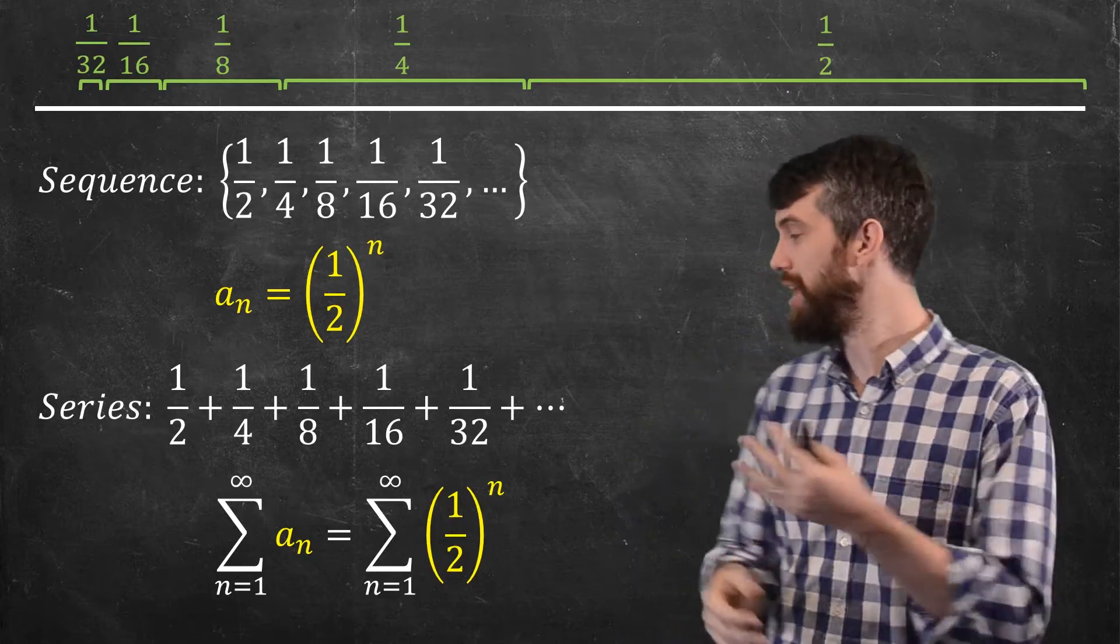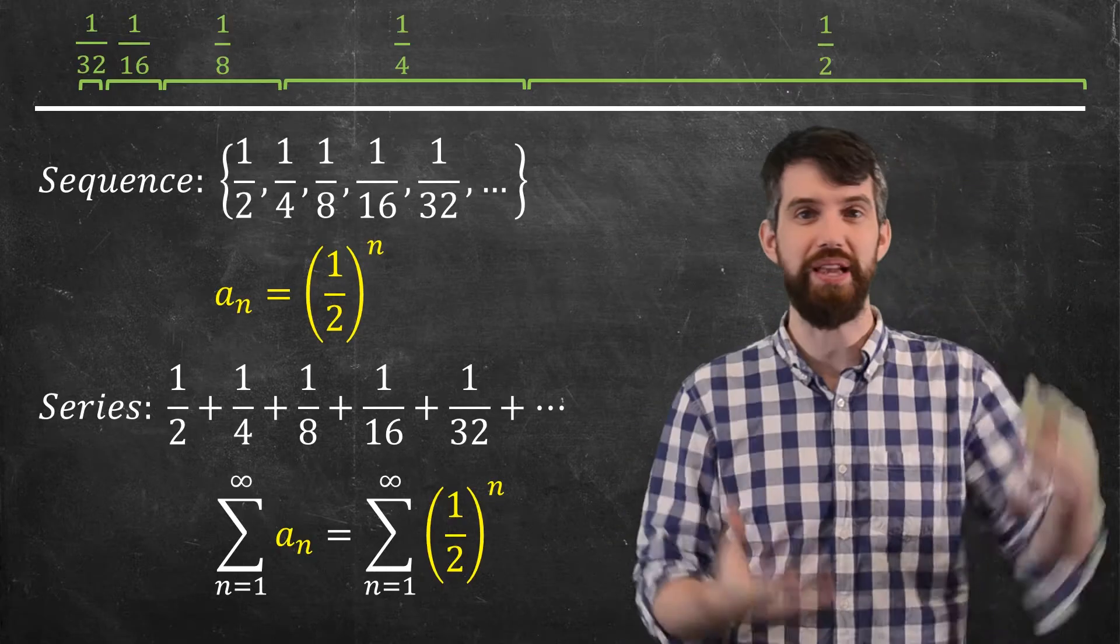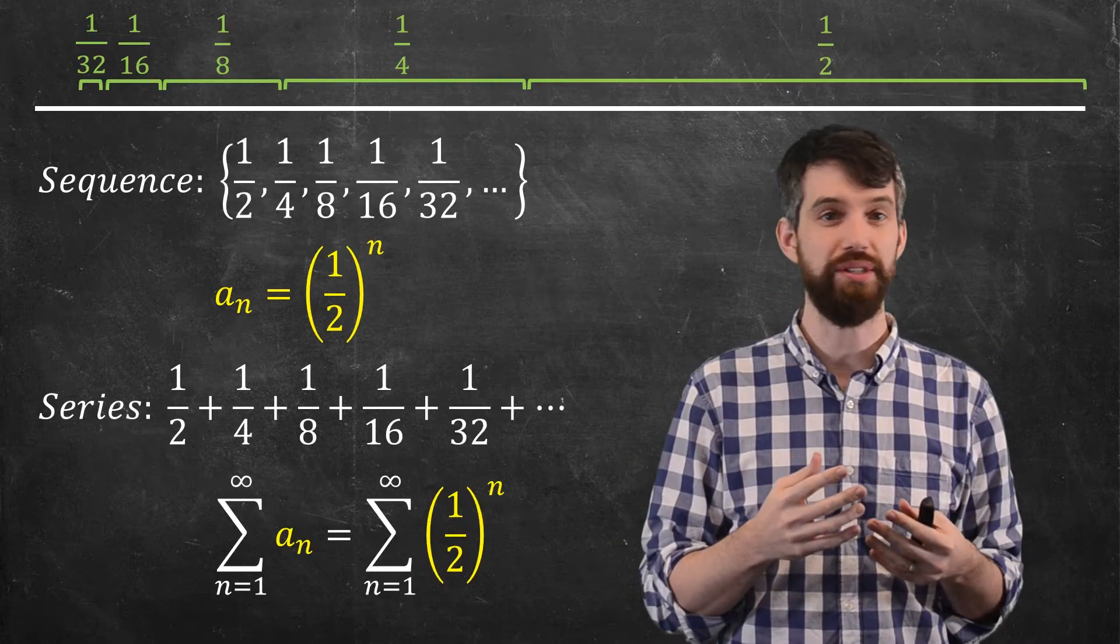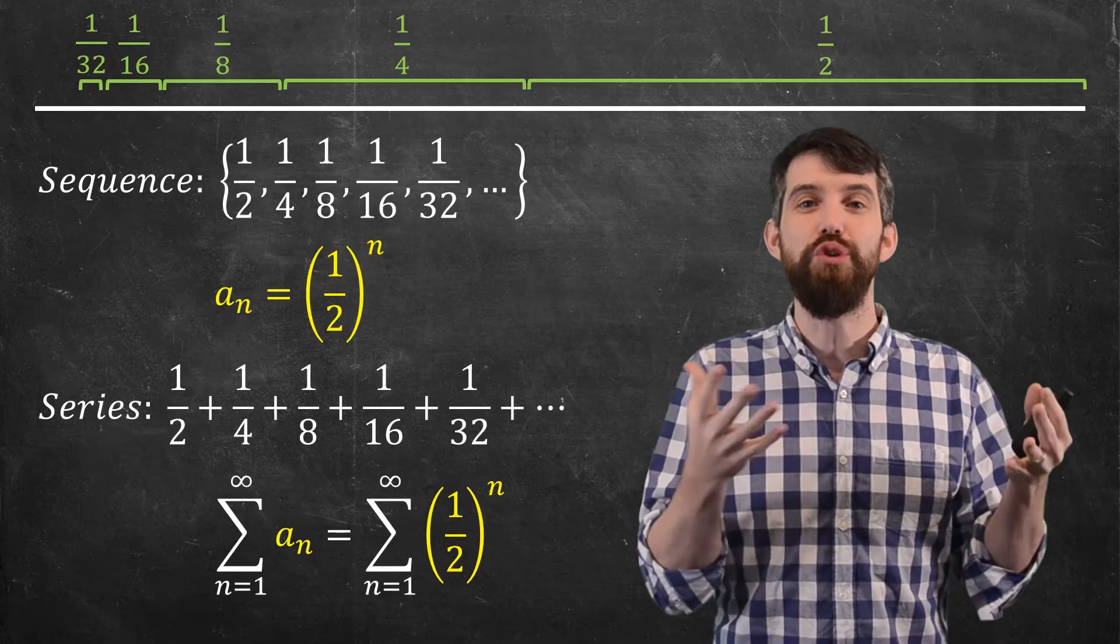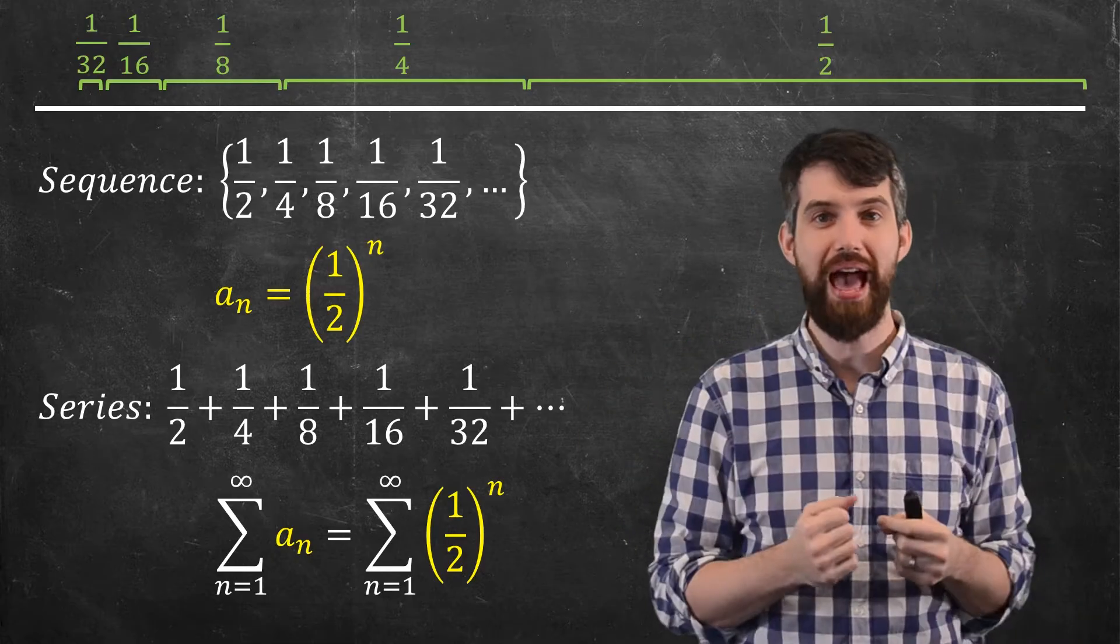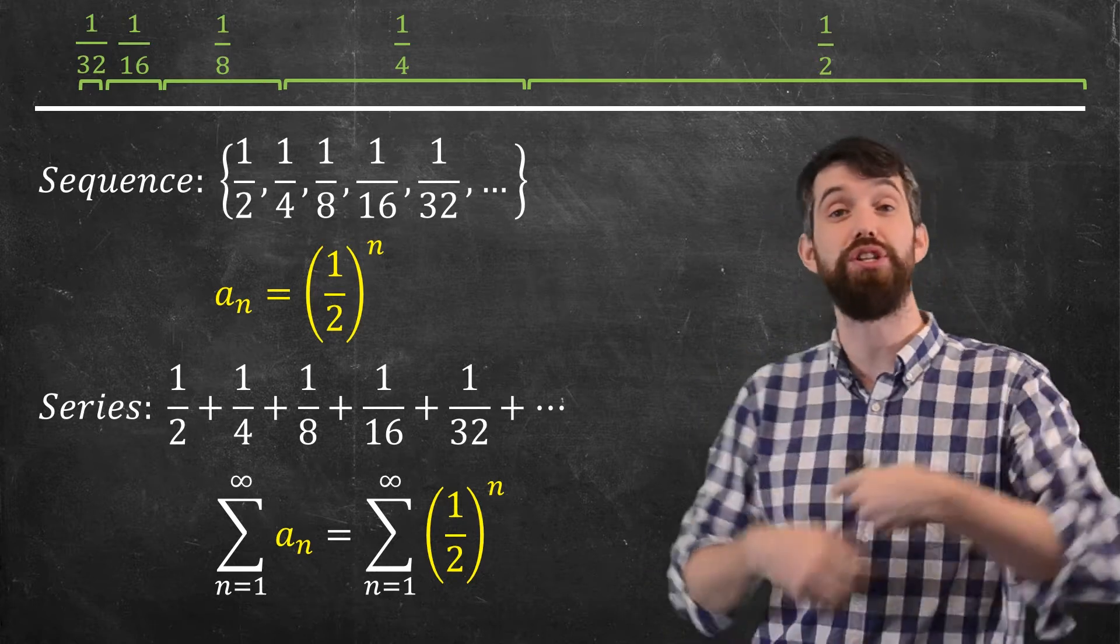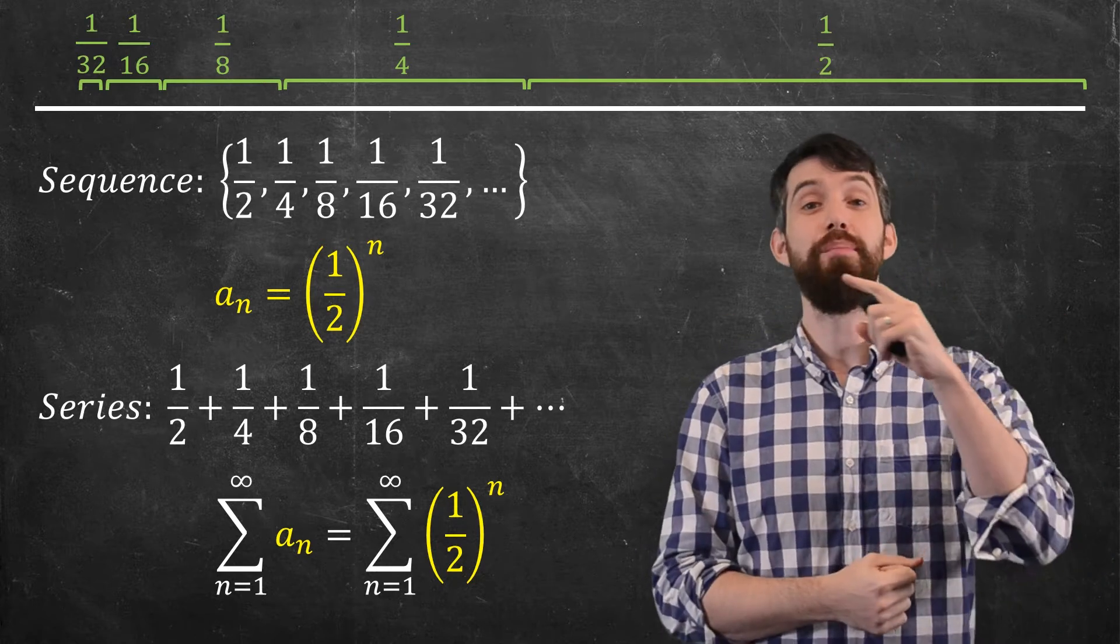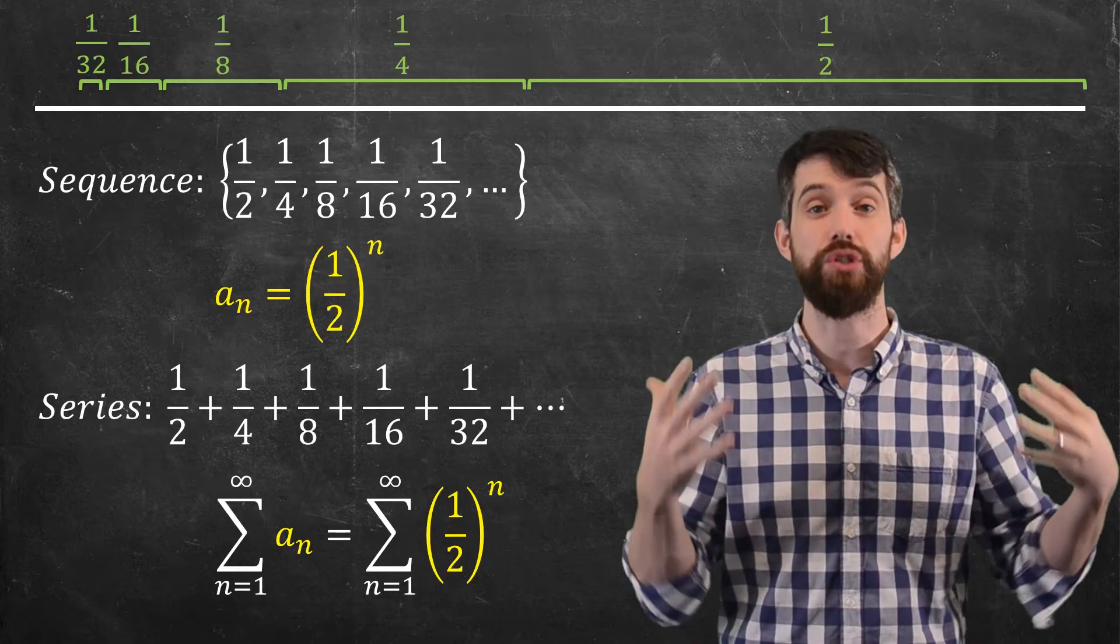And what this notation just means when you see this big sigma, when you see these n's here, they are an instruction of how you add things together. First you add in, when you plug in one, that's the value of a half. Then you add to that, plugging in n equal to two, which is the value of a quarter. Then you add in, plugging in n equal to three, and so on.